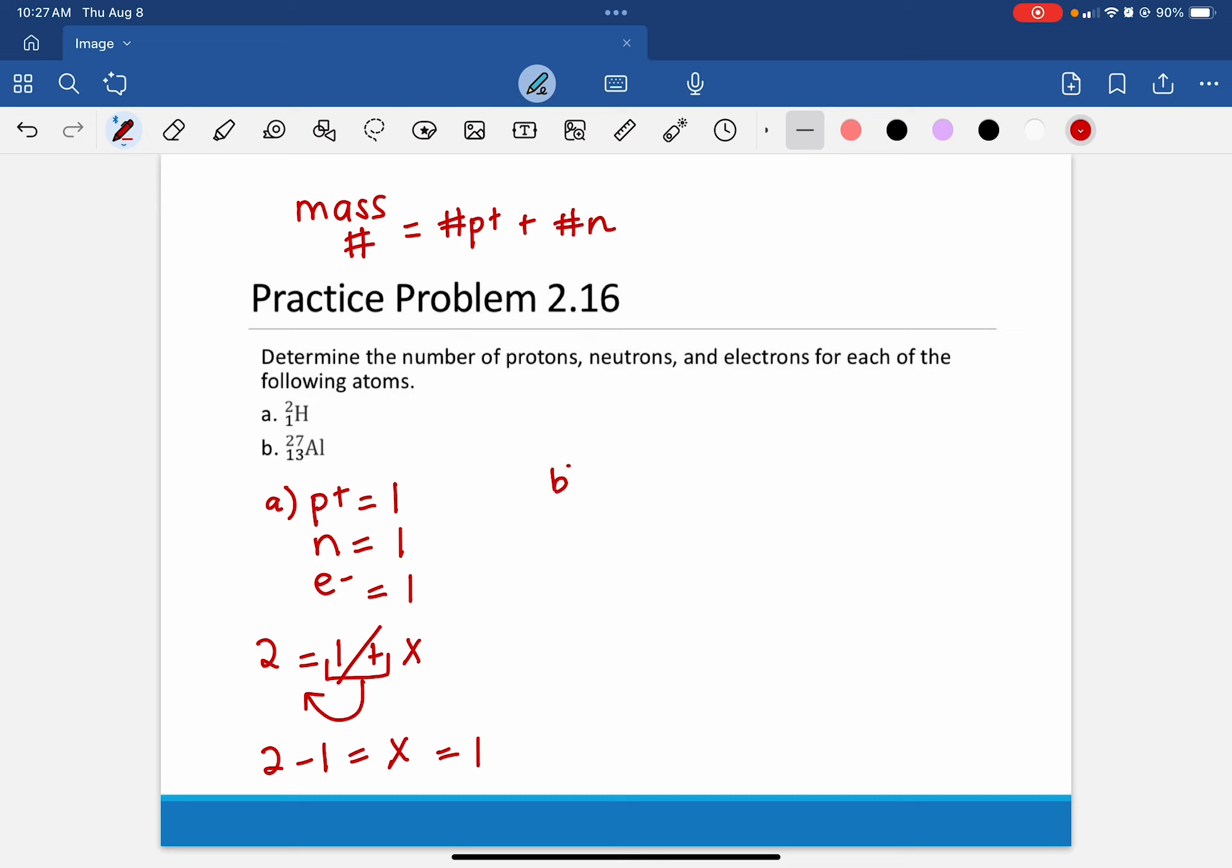Letter B. Protons, neutrons, and electrons. Once again, we are told the number of protons through the atomic number. That's 13. And again, in Chapter 2...